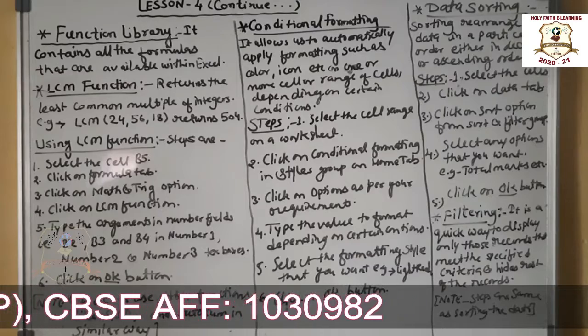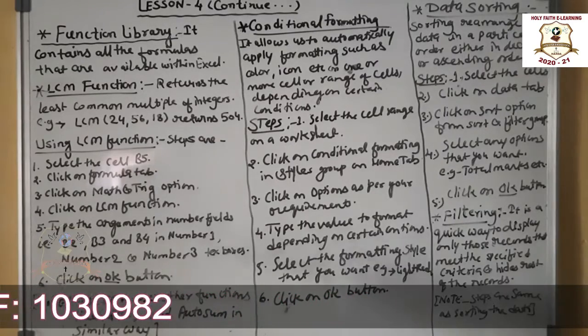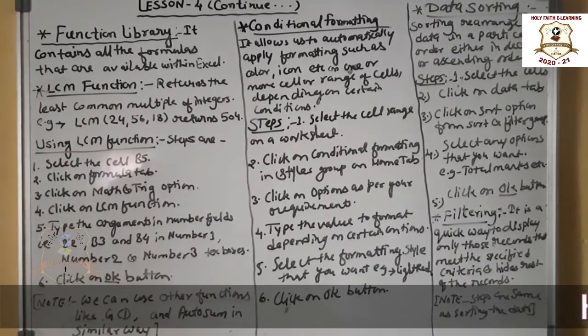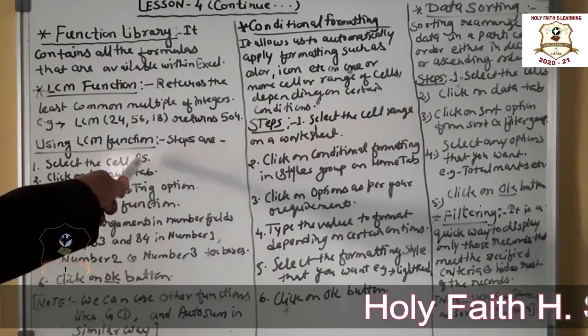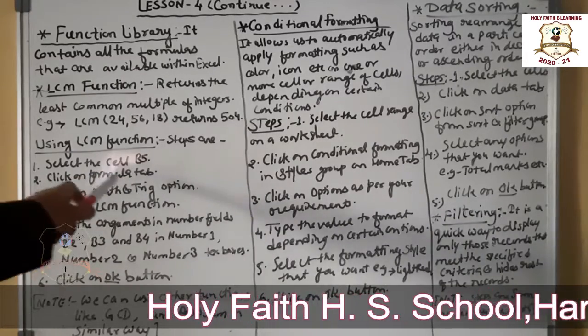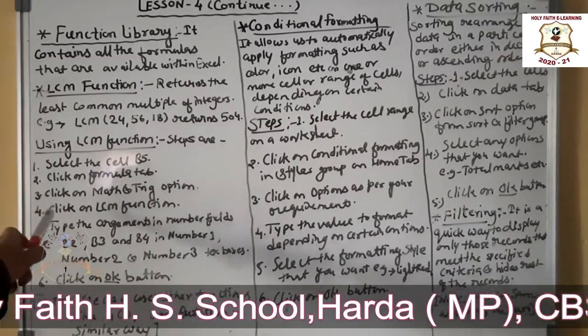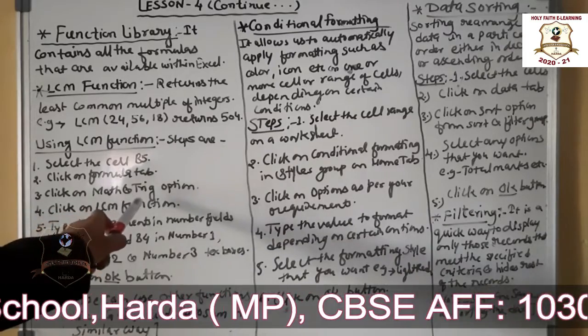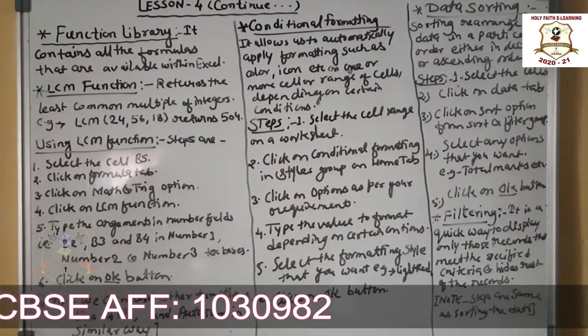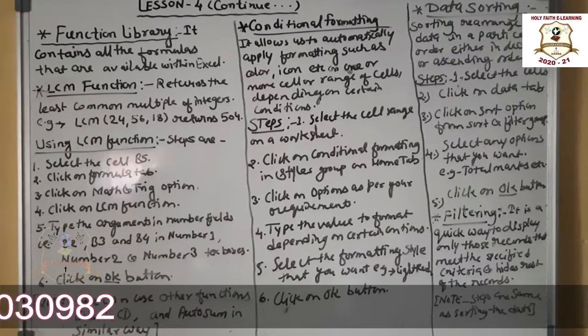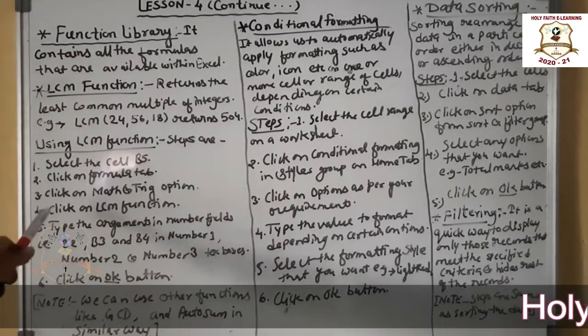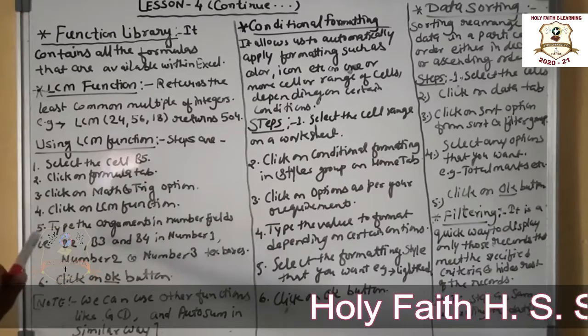How to use the LCM function in Excel? The steps are: select the cell like B5. Then click on the formula tab, then after that click on Maths and Trig formula - that's trigonometrical formula option. Then click on LCM function.